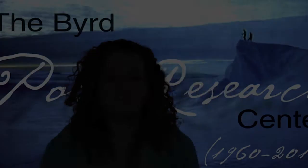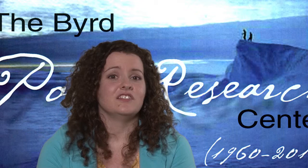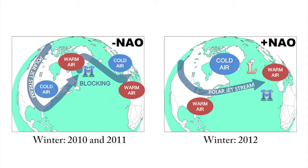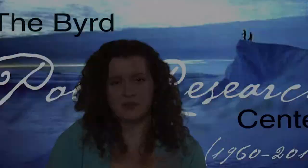The NAO has a large influence on the climate of the eastern U.S. Looking at just the past few winters, 2010 and 2011 were extremely cold and snowy for most of the eastern seaboard due to a negative NAO. The NAO then shifted to a positive phase around 2011, and so the following winter in 2012 was considerably warmer — record-breaking warmth.